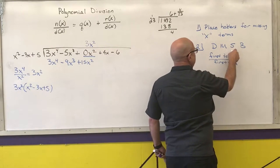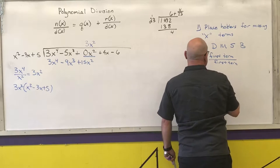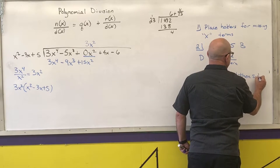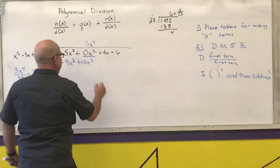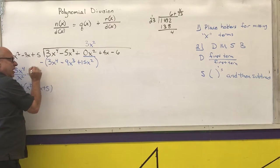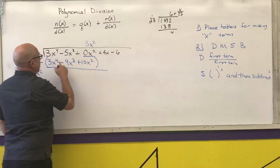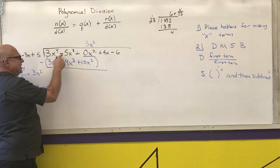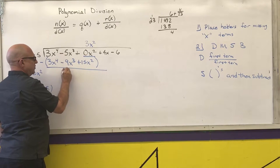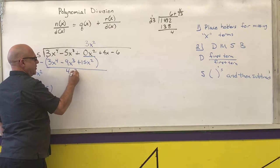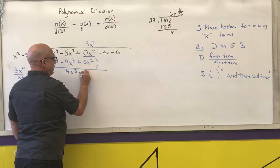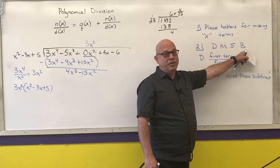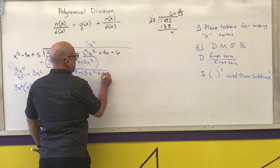For the subtraction step, always put parentheses around the product and then subtract. 3 minus 3 is 0. Negative 5 minus negative 9 is negative 5 plus 9, which is 4x cubed. 0 minus 15 is negative 15x squared. Then bring down the rest of the polynomial: 4x minus 6.